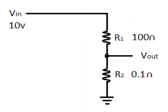So in cases where the lower resistor is very small, like 0.1 ohms, Vout is going to be zero volts.